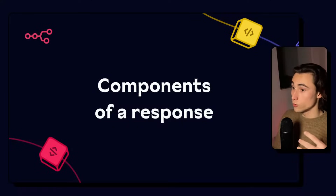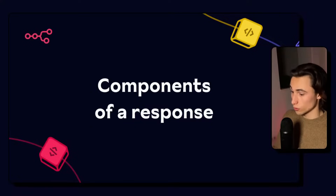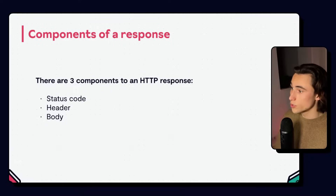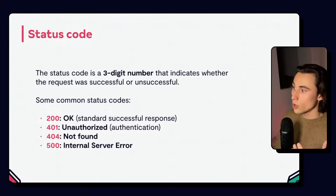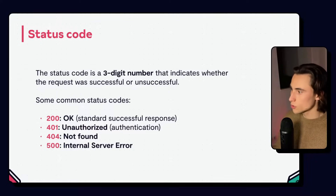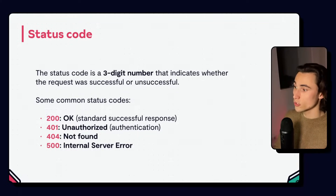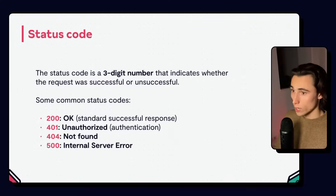Now we've seen everything we need to send a request. Now we're going to look at how the application is going to answer with a response. There are three main components to an HTTP response: the status code, the header, and the body. The status code is a three-digit number which will give you information on whether the request was successful or unsuccessful. The most common status code is 200, which means OK — this is the standard successful response. It means your API request was executed well and the application is telling you the request was good.